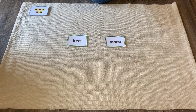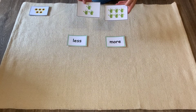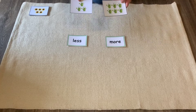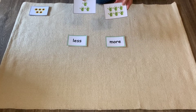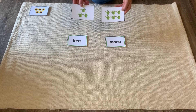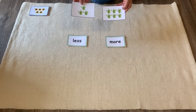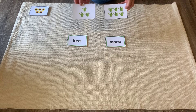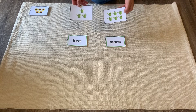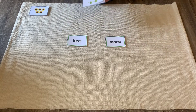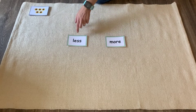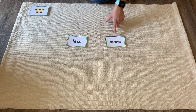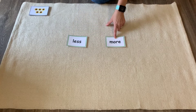So we have two cards of each object. One of the cards will have less of that object and one will have more. So what we have to do is count them and figure out which one has less and which one has more.